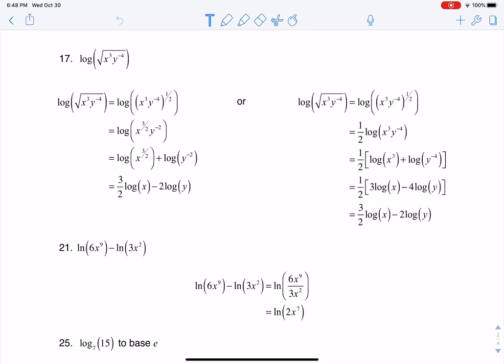So there's a couple of ways you can do this, but the first thing it requires is us thinking about the square root of something, and this something in particular is x cubed y to the negative fourth, and taking that and rewriting it with a rational exponent.